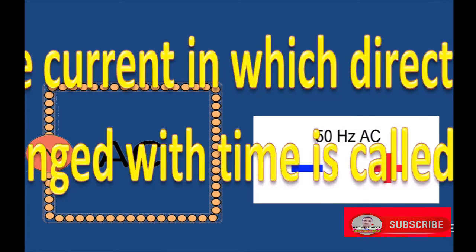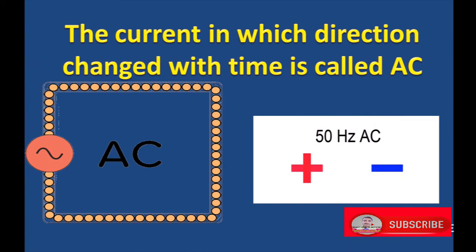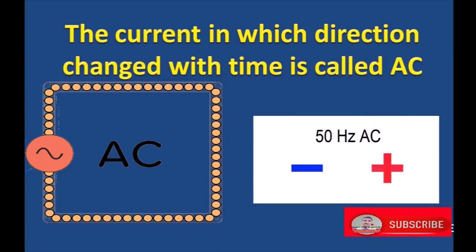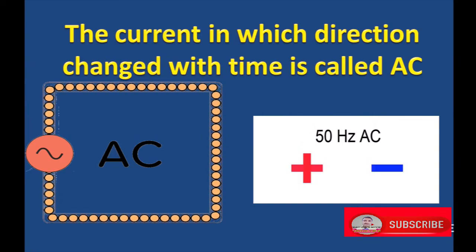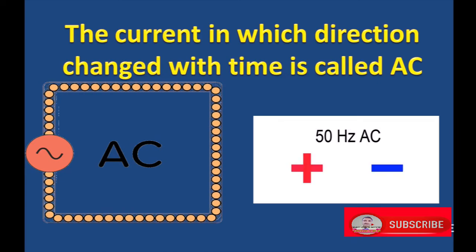AC: The current in which direction changes with time is called AC. Here direction of current changes with time.